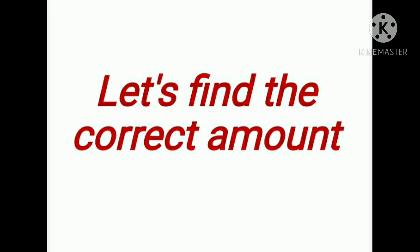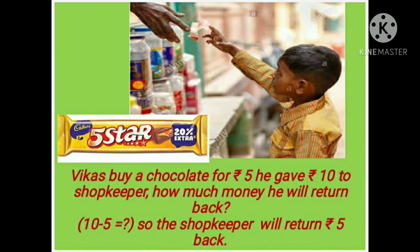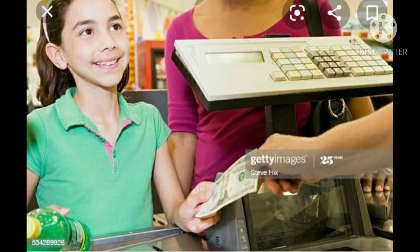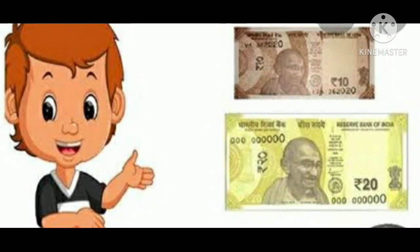Let us find the correct amount. How much money will the shopkeeper return back? Subtract 5 from 10, so the shopkeeper will return 5 rupees back. Sonu has a 10 rupees note and his mom gave him a 20 rupees note — how much money does he have in all? Let us add: 10 plus 20. Now Sonu has 30 rupees.